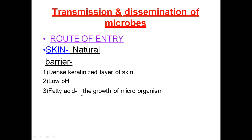Transmission and dissemination of microbes: routes of entry. The first is skin — the outermost natural barrier. The skin's dense keratinized layer acts as the primary barrier. pH imbalance and disruption can initiate bacterial infection. The skin is the outermost layer of the human body, and microorganisms can enter via lymphatic systems or tissues.